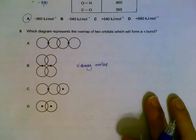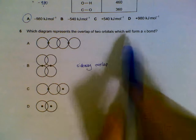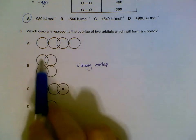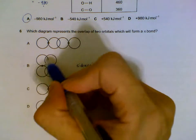Forming of pi bonds. When we form pi bonds, we need a sideway overlap of the orbitals, which is represented by B. Sideway overlap.